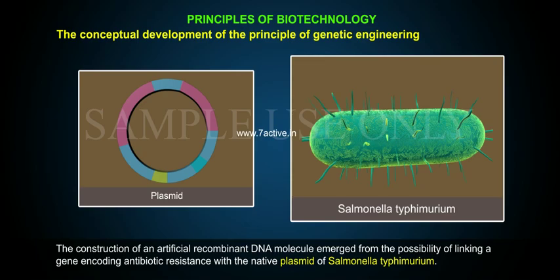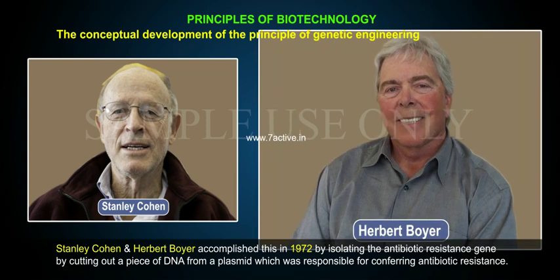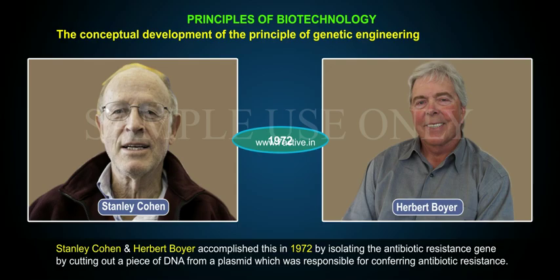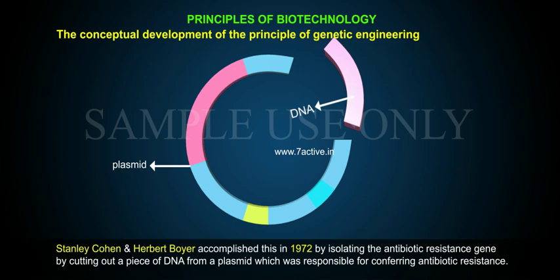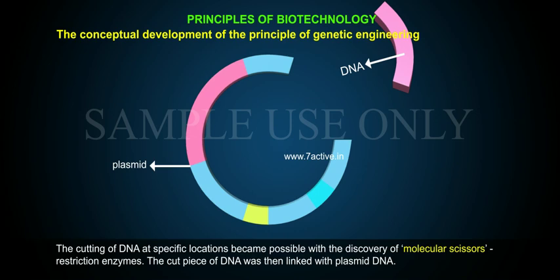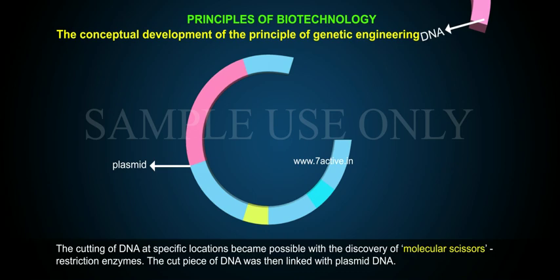The construction of an artificial recombinant DNA molecule emerged from the possibility of linking a gene encoding antibiotic resistance with the native plasmid of Salmonella typhimurium. Stanley Cohen and Herbert Boyer accomplished this in 1972 by isolating the antibiotic resistance gene — cutting out a piece of DNA from a plasmid responsible for conferring antibiotic resistance. The cutting of DNA at specific locations became possible with the discovery of molecular scissors: restriction enzymes.